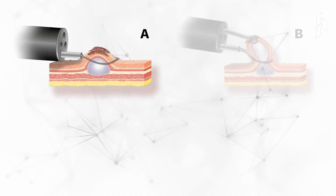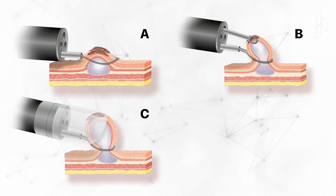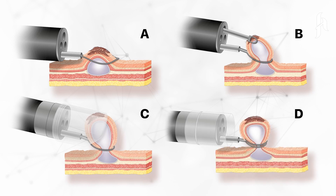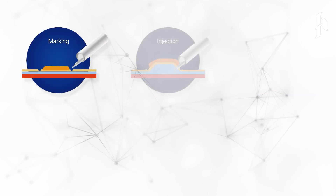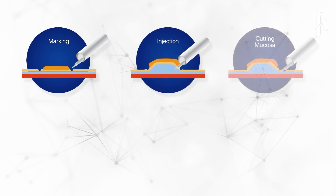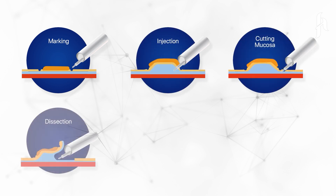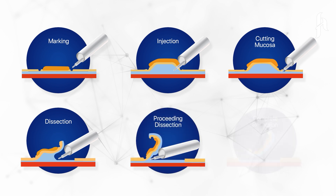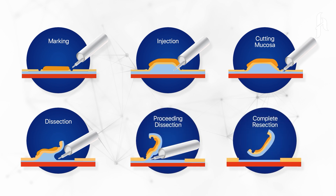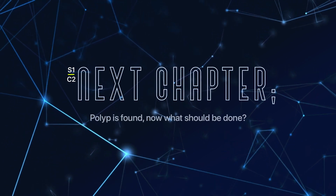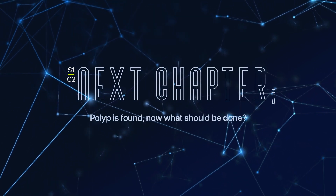After all these investigations, which method to be applied for treating the polyp is decided. These methods start from conventional polypectomy and can be followed as endoscopic mucosal resection and endoscopic full thickness resection. The right treatment modality is chosen with right evaluation and right staging to achieve successful treatment results. In our next video, we will be talking about treatment of polyps.